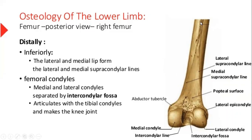We have seen the linea aspera medial and lateral ridges. The medial lip gets continued as the medial supracondylar line, and the lateral lip gets continued as the lateral supracondylar line. The adductor tubercle is this part. Then we have a popliteal surface — the word popliteal is always used for the knee in the lower limb. Then we have lateral epicondyle and medial epicondyle, lateral condyle and medial condyle. The inner fossa is the intercondylar fossa, and the line is the intercondylar line.